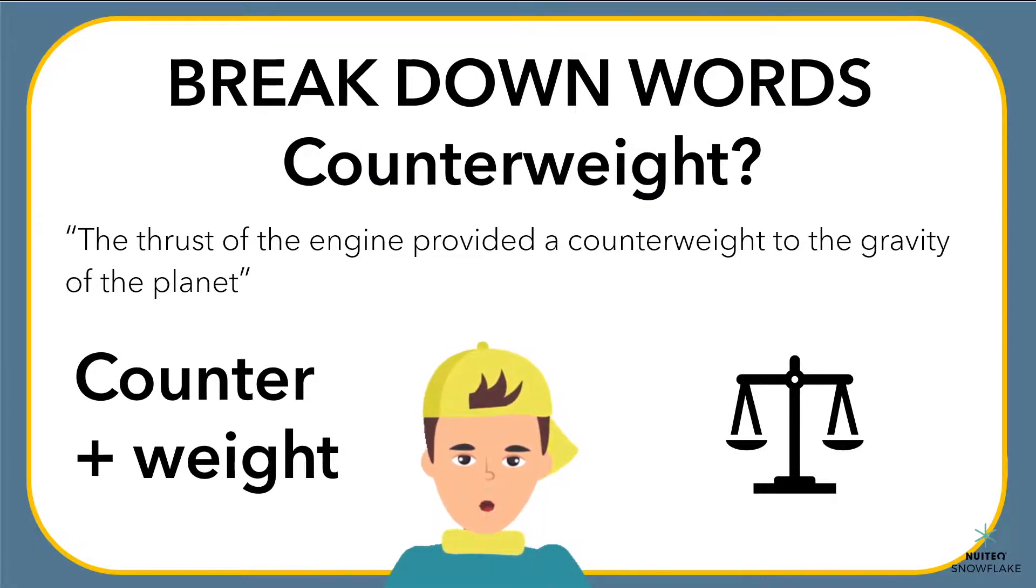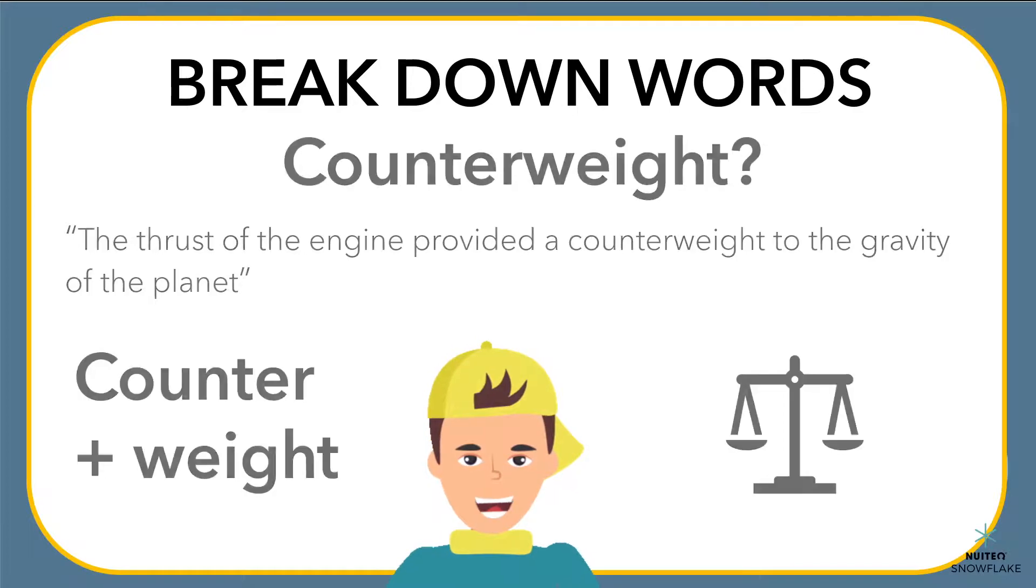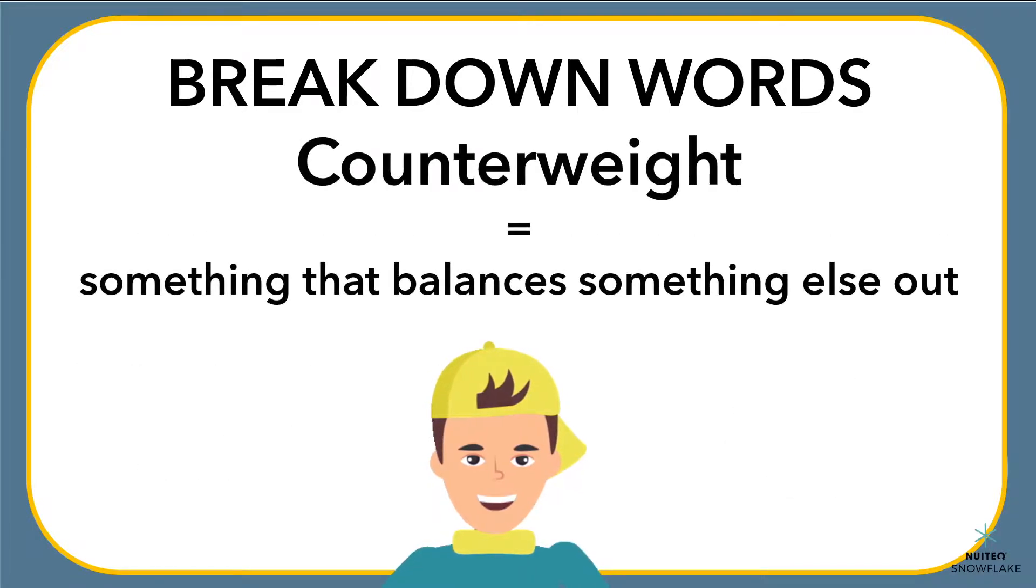In the sentence above, there are no actual weights involved. But the engine's powerful thrust is in contrast with the strong gravity of the planet. It balances it out. So, a counterweight is something that balances something else out.